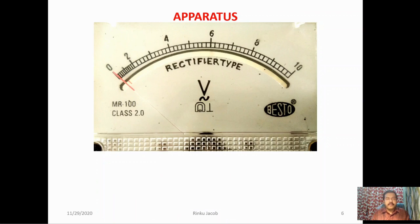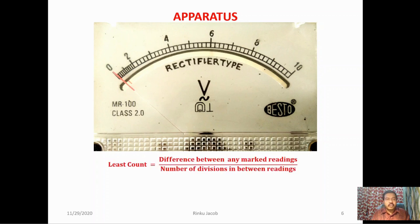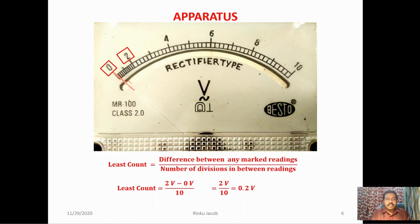This is the magnified image of the voltmeter scale. The voltmeter can give readings in the range from 0 to 10 volt. To find the least count, we take 0 volt and 2 volt as our marked readings. The difference is 2 volt divided by 10 divisions, giving 0.2 volt. So the least count of the voltmeter is 0.2 volt.